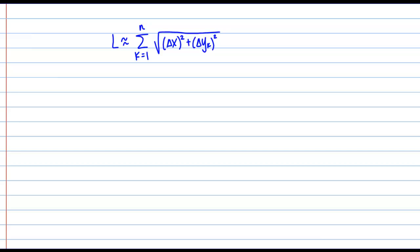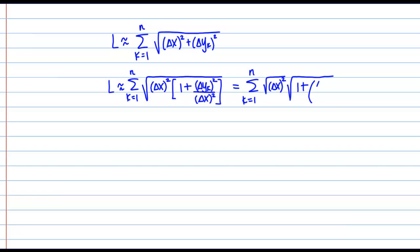First, we're going to need to do a bit of algebra. I'm going to start by factoring out a delta x squared underneath the square root. When I factor out delta x squared, that means I need to divide both terms by delta x squared, so I get delta x squared times the quantity 1 plus delta y sub k squared over delta x squared. Next, I'm going to split up this root like so: the square root of delta x squared times the square root of 1 plus the quantity delta y sub k over delta x quantity squared.